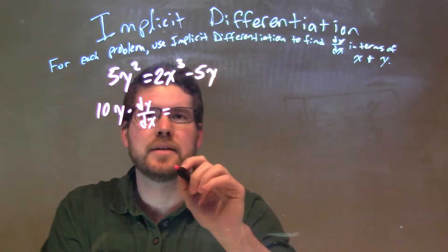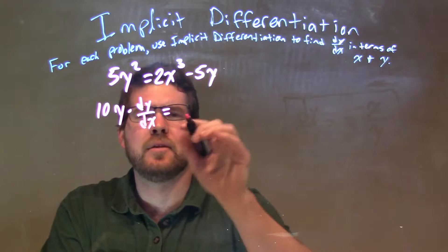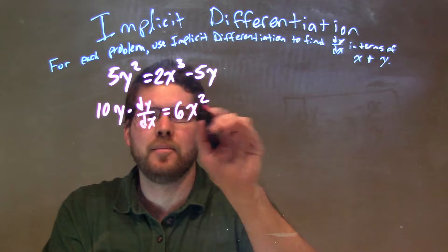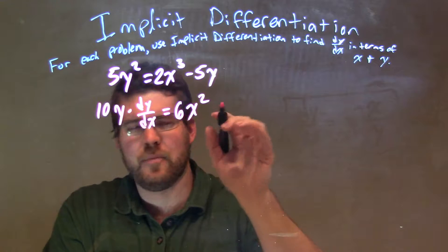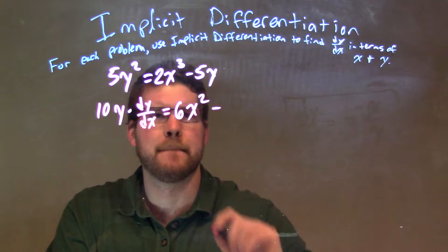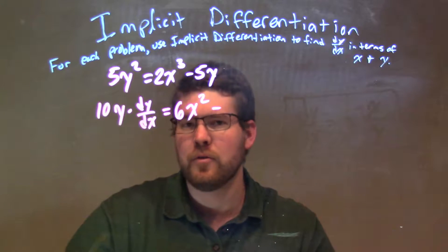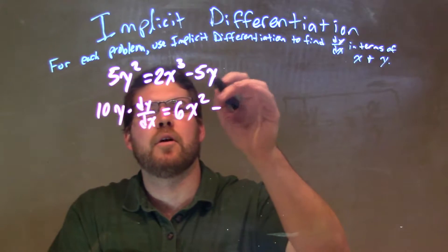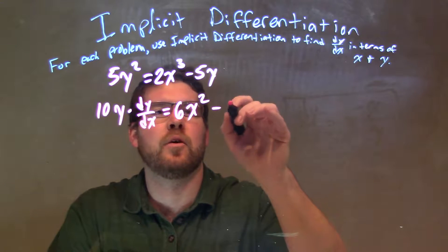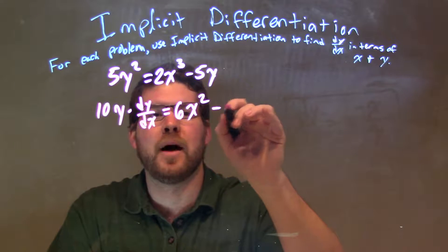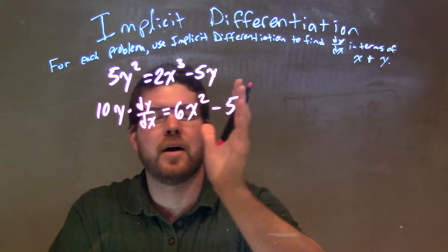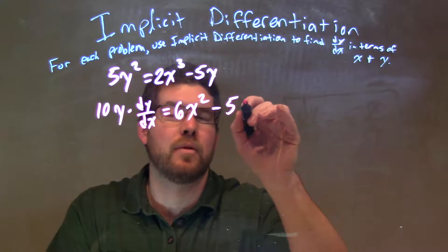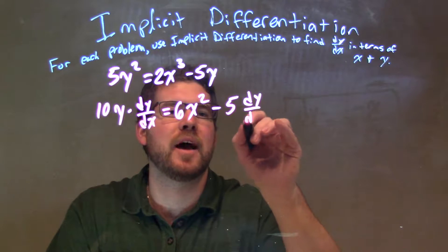On the right-hand side, power rule here: 3 comes down times 2 is 6, giving us 6x squared. We don't have to do an extra step for the x's. Minus 5y — the derivative of 5y is minus 5, times the derivative of y, since 5 is a constant — so that's minus 5 dy/dx.